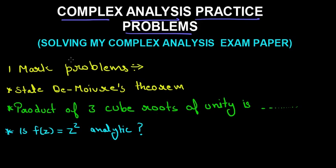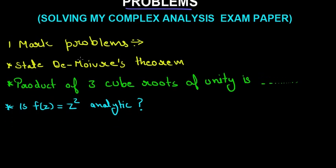So let's solve the one mark problem first. In the one mark problem, they asked to state the De-Moivre's theorem, which is simply for example cos θ plus iota sin θ raised to the power n is equal to cos nθ plus iota sin nθ. So this is basically the De-Moivre's theorem. So we have to state this, we just have to give the statement also.